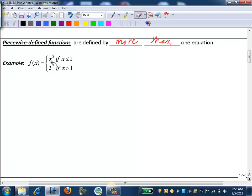So it's saying f of x is equal to x squared if the x value's less than or equal to 1, and f of x equals 2 if x is greater than 1.